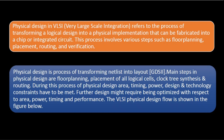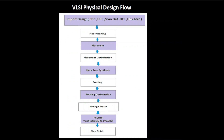In this video we will discuss about the overview of VLSI physical design flow and what are all the steps required in the physical design flow. First, we import the design, in which we give all the input files required for the physical design flow. The input design contains SDC files, UPF for power, DEF files, Liberty file, Technology file, and LEF file.